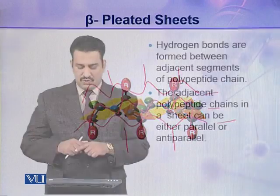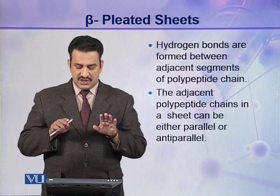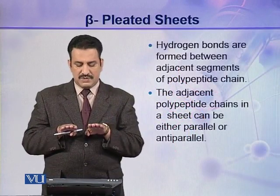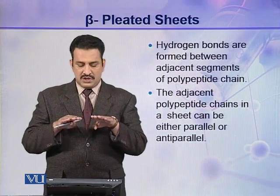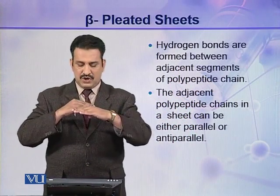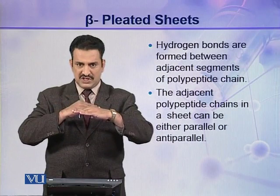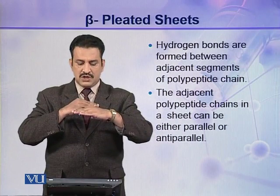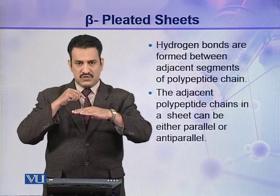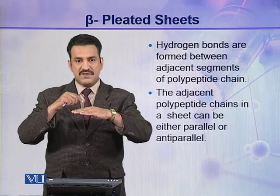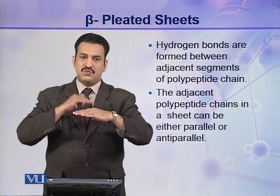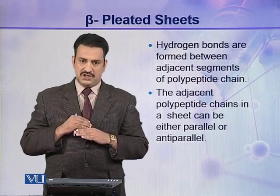Hydrogen bonds are formed between adjacent segments of polypeptide chains. When two zigzag polypeptide chains come close to each other, hydrogen bonds are formed between different segments of these two polypeptide chains.